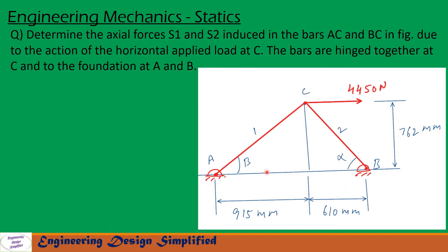In this problem, two bars AC and BC are hinged to the ground at A and B, also hinged together at C. At point C there is a force of 4450 Newton applied horizontally. So due to this force we need to find reactions in the bars AC and BC.